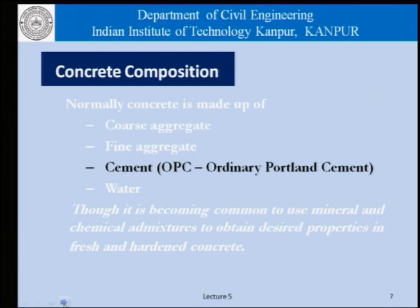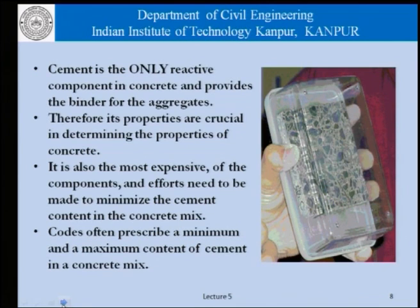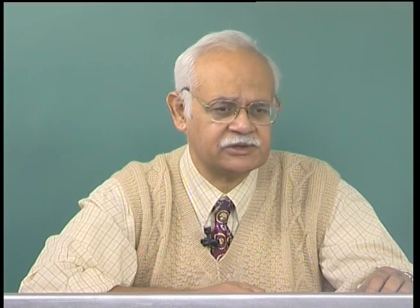Coming to the discussion on cement, which is ordinary Portland cement. We must remember that cement is the only reactive component in concrete and the hydration products, which are formed when cement reacts with water, provide the binder for the aggregates. Therefore, the properties of concrete are determined to a large extent from the properties of cement and the binding hydration products. Also cement is the most expensive of the components and efforts need to be made to minimize the cement content in the concrete mix. Codes often prescribe a minimum and a maximum content of cement in a concrete mix. The minimum is prescribed from the point of view of durability, whereas the maximum is sometimes prescribed from considerations of heat of hydration, as we shall see some time later.